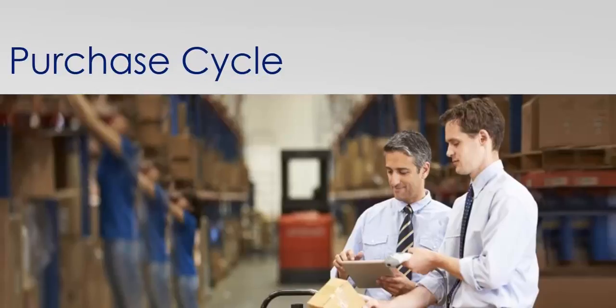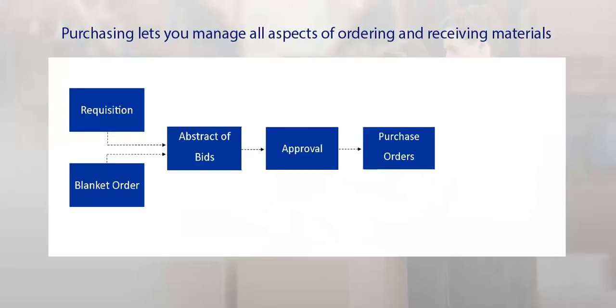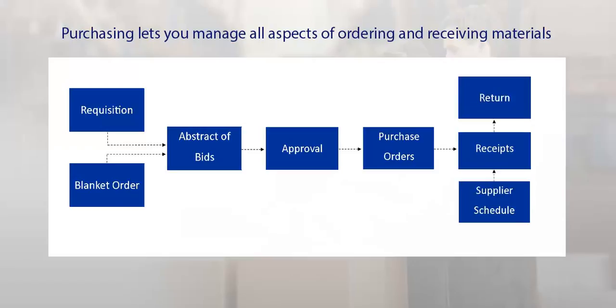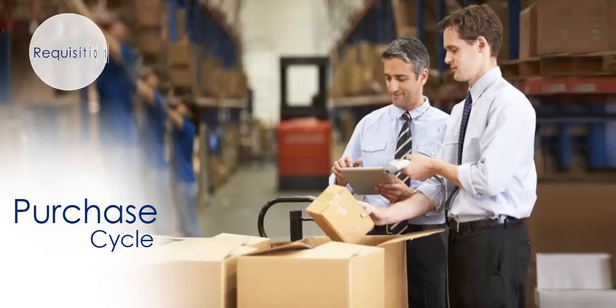The purchase cycle module lets you manage all aspects of ordering and receiving materials and services, such as requisitions, approvals, orders, receipts, and returns. It supports purchasing of products as well as non-product materials and services such as subcontracting, and gives you the means to support discrete, process, and just-in-time processing.